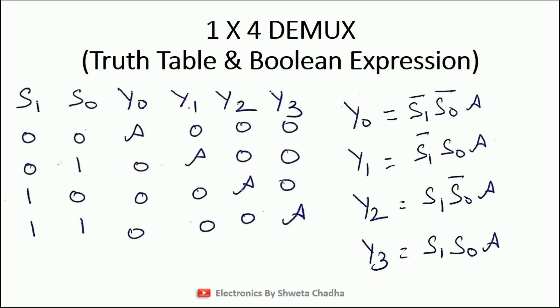For the truth table and Boolean expressions: two select lines give four combinations — 00, 01, 10, 11. There are four output signals: Y0 is active for 00, Y1 for 01, Y2 for 10, Y3 for 11. The four Boolean expressions are: Y0 = S1̄·S0̄·A, Y1 = S1̄·S0·A, Y2 = S1·S0̄·A, and Y3 = S1·S0·A.